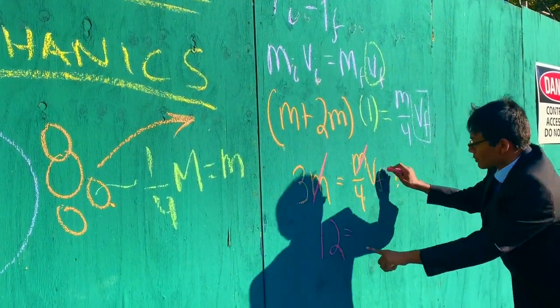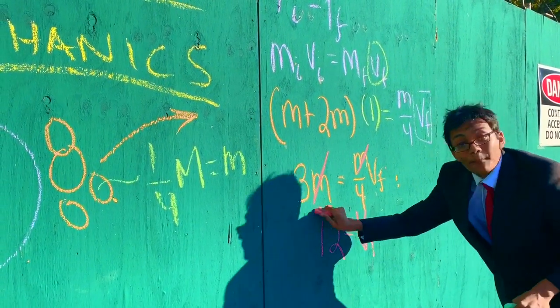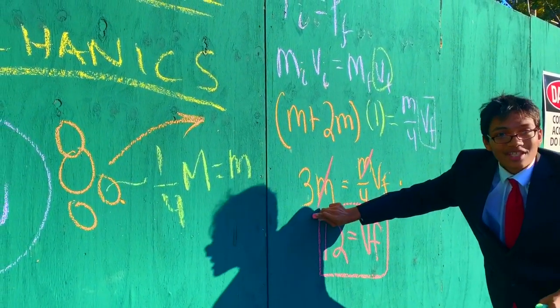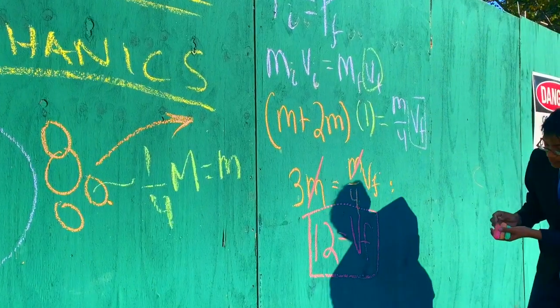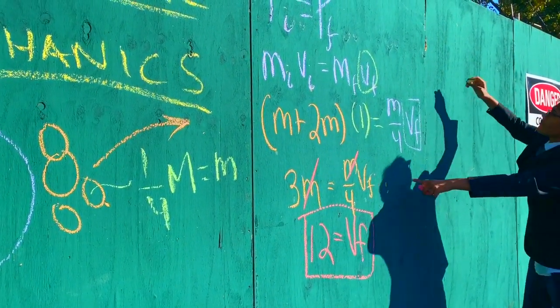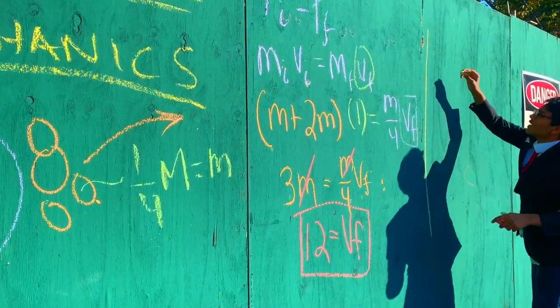12 meters per second is equal to the final recoil velocity. But that's only the first step, recall that we have not one rock not two rocks but a bag of eight rocks.